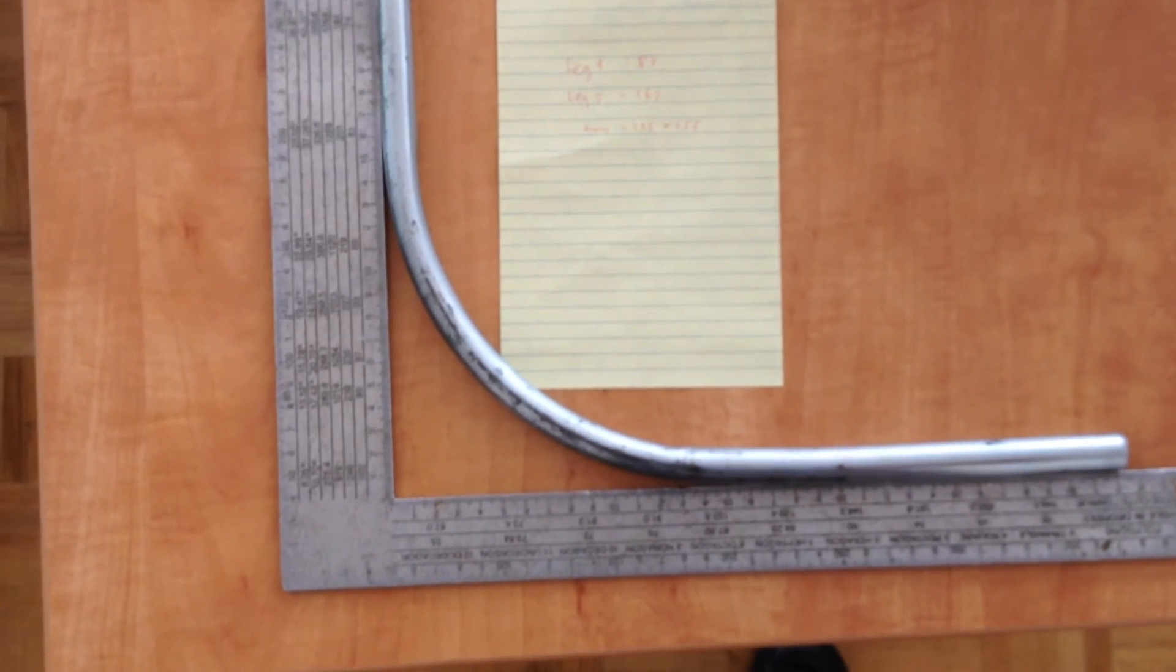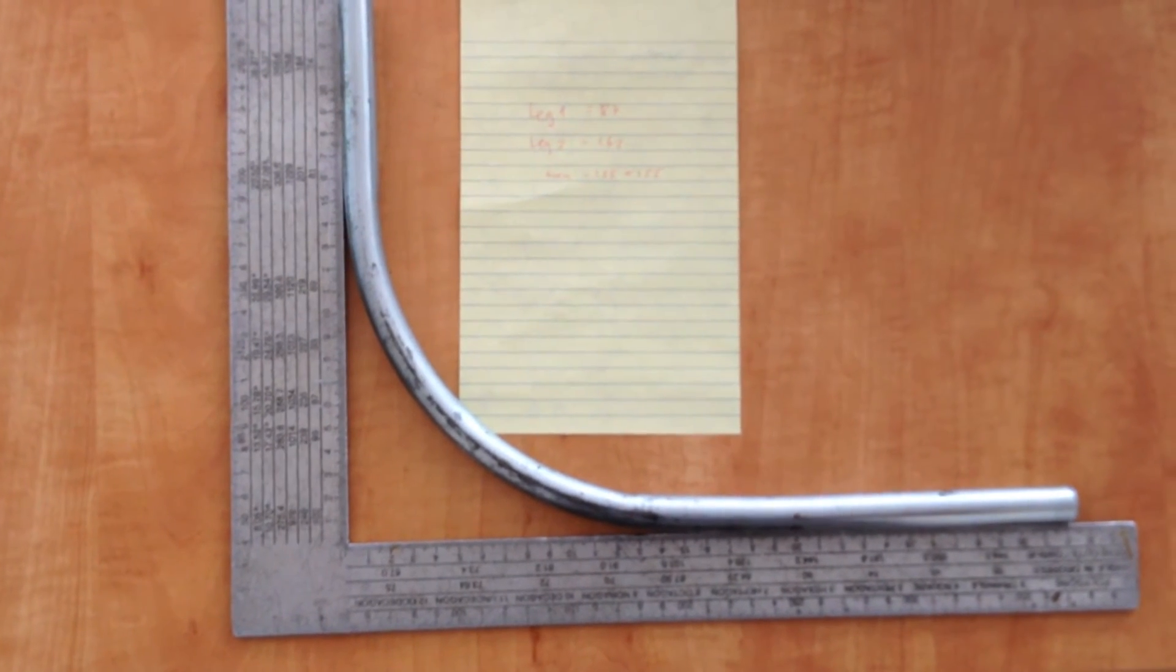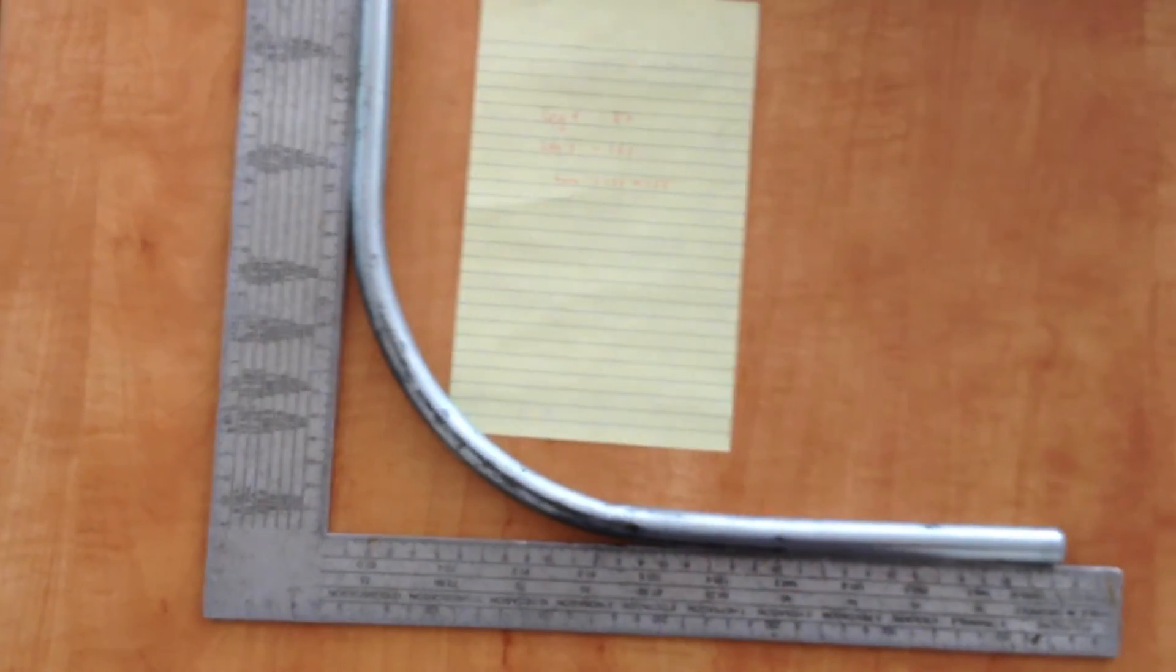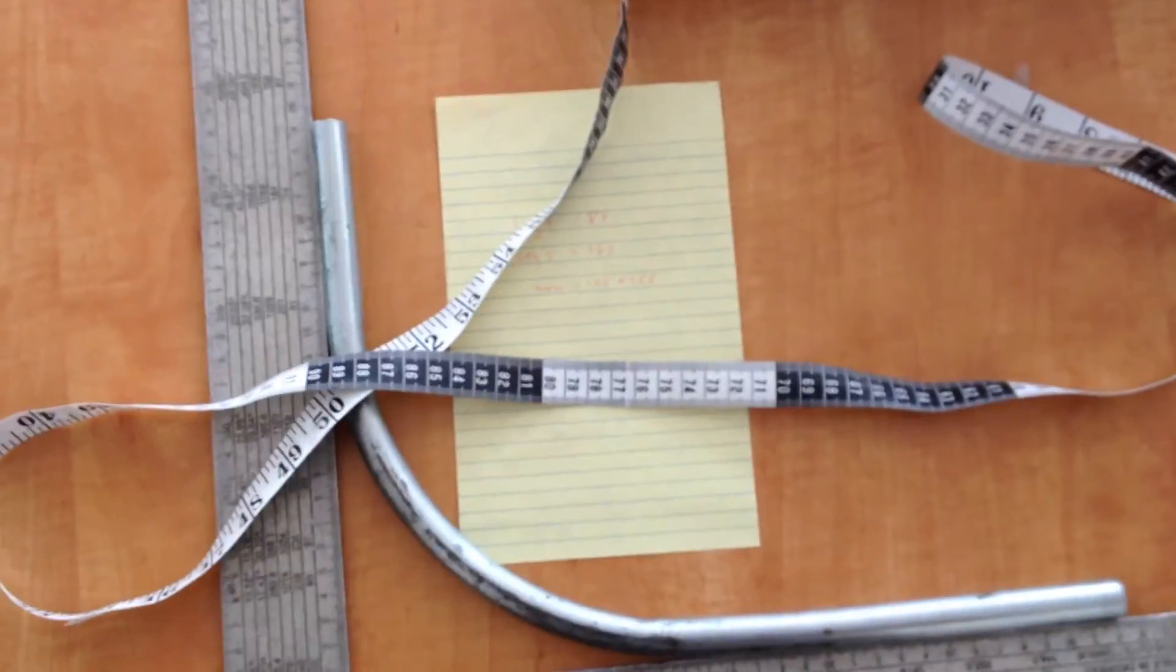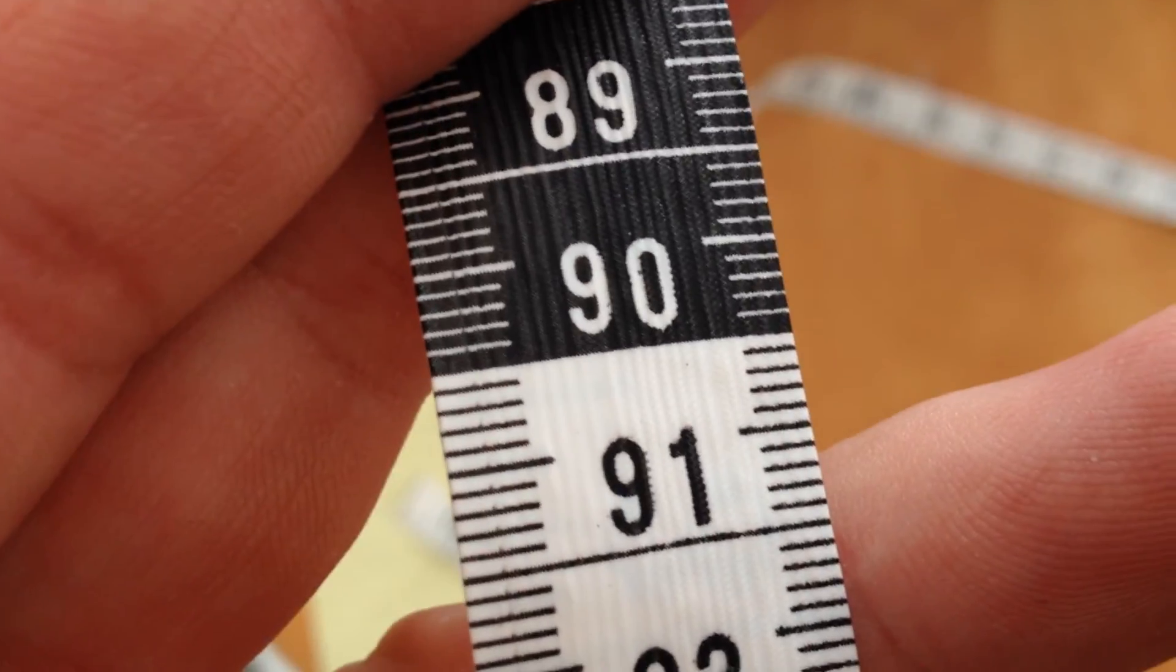Now, you know that it's not possible to measure it. One-tenth of a millimeter is way too fine to read on a tape measure that you can curve around, like this one, or paper, or anything of this sort. There's no way you can accurately read one-tenth of a millimeter on this one. It's impossible.